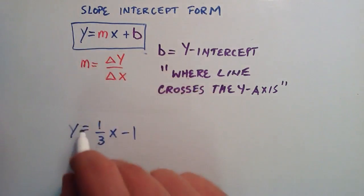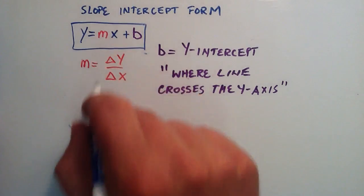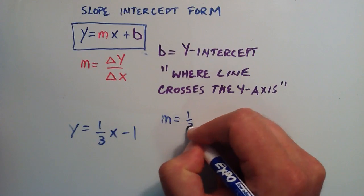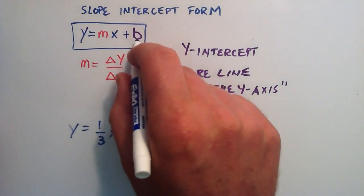And so we just kind of go through it. Y, we have a y, we have an equals, we have an m, and we have a one-third. So the m is equal to one-third. Our slope is equal to one-third in this line.